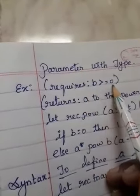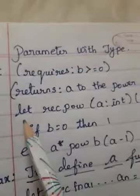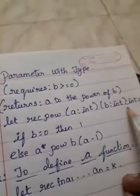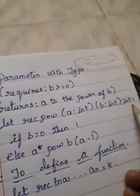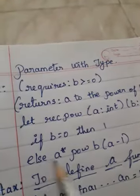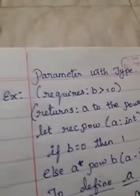The parameter with type example has: requires colon b is greater than or equal to 0; returns colon a to the power of b. Then: let rec pow (a: int) (b: int) : int = if b = 0 then 1 else a * pow (b-1) of a minus 1.